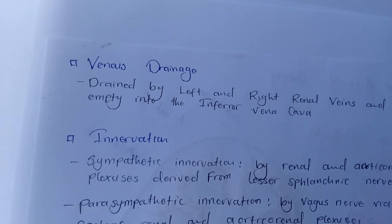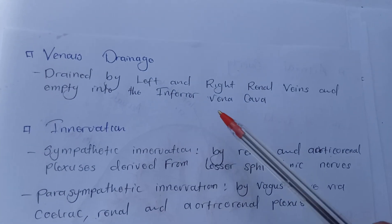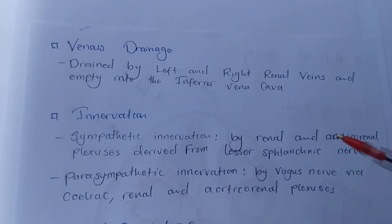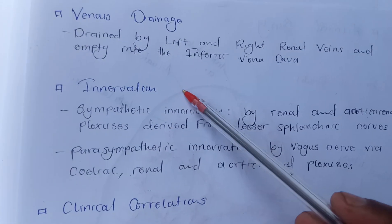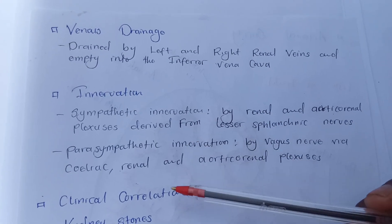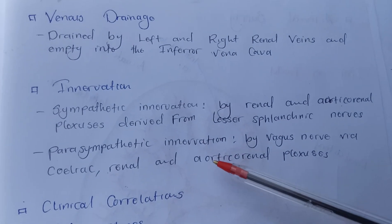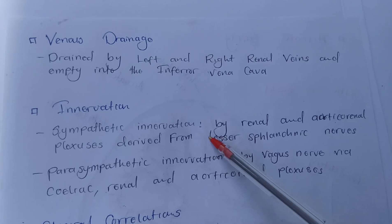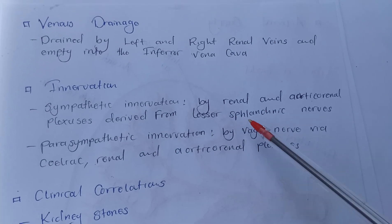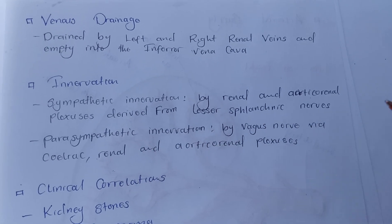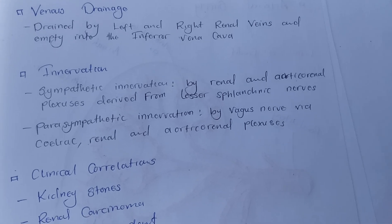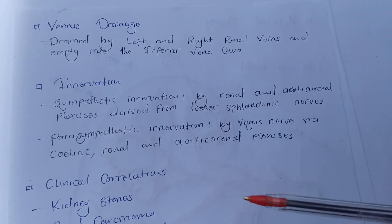The venous drainage is by the left and right renal veins, which empty into the inferior vena cava and follow the course of the arteries. The innervation of the kidneys is by the renal plexus. Sympathetic innervation is by the renal and aorticorenal plexi derived from the lesser splanchnic nerves. Parasympathetic innervation is by the vagus nerve via the celiac, renal, and aorticorenal plexi.